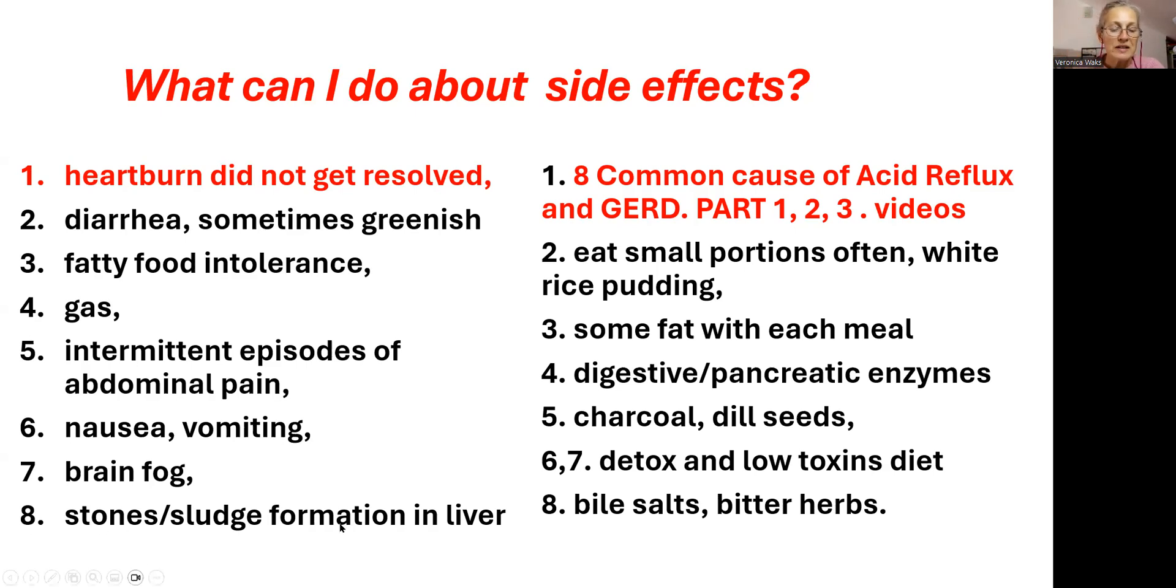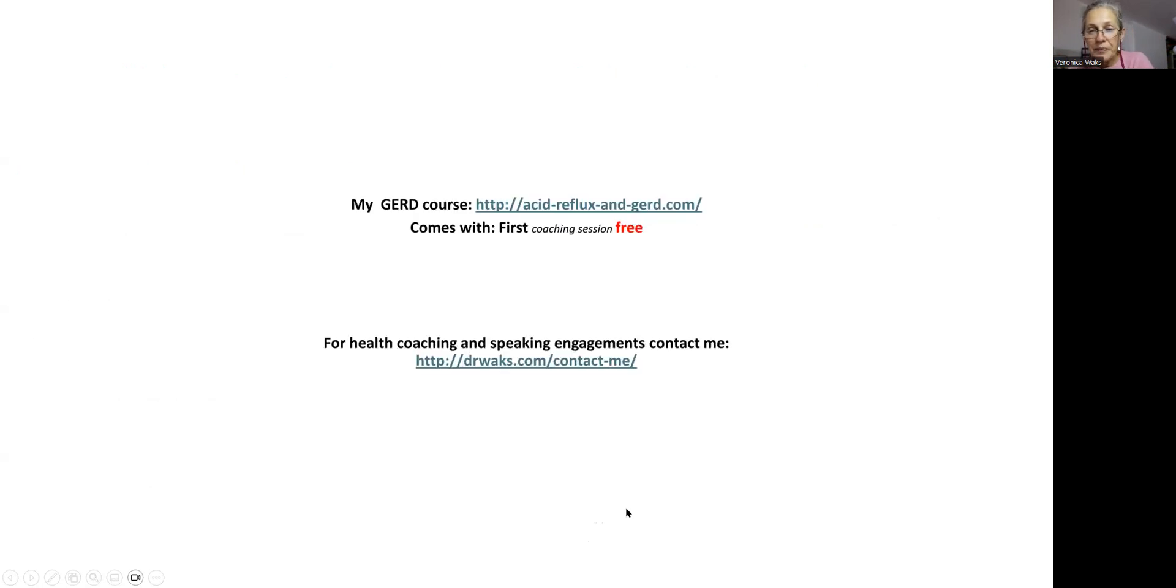Number eight, stone sludge formation within the liver. What that means, the underlying problem of stone formation has not been addressed. What do you do to address that? You change your diet. You start to eat at least half a green apple every single day. You incorporate bitter herbs such as arugula, escarole. Start to cook them, then you can eat them in form of salad. Experiment with black radish. Red radish and daikon are excellent. And if you still feel like maybe something is not quite right yet, experiment with bile salts.